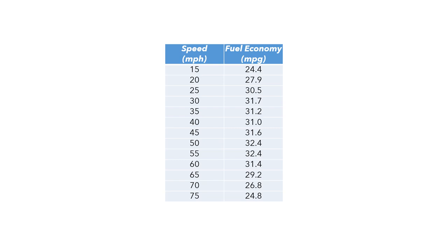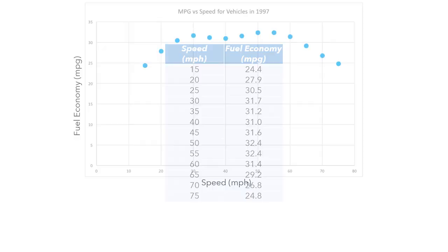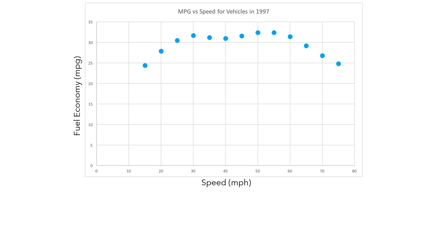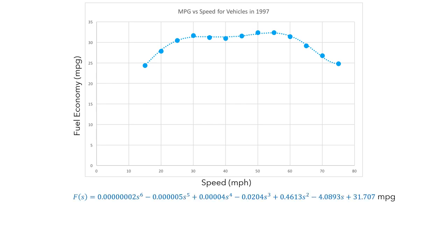As before, to get a better sense of the patterns in our data, let's look at a graph. This graph shows the data points in the table. To get a better sense of the patterns in the data, we can add a trend line, and we can also find a formula for this trend line. This shows the equation for the function f, fuel economy as a function of speed, measuring fuel economy in miles per gallon.